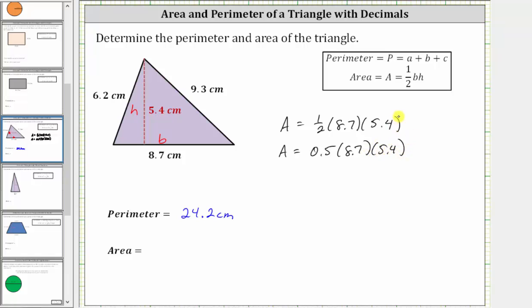So multiplying from left to right, let's determine the product of 0.5 and 8.7. But to do this by hand, let's change the order and determine 8.7 times 0.5. Notice how each factor contains one decimal place, and therefore the product will contain two decimal places.